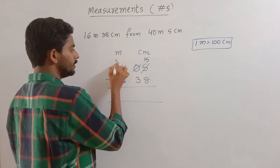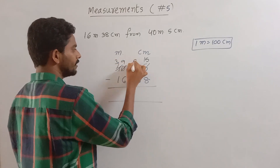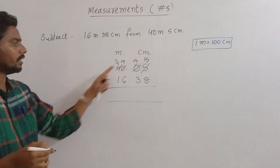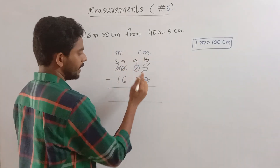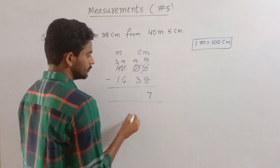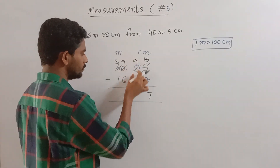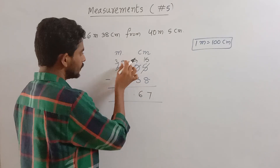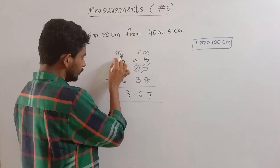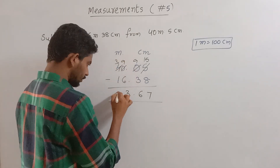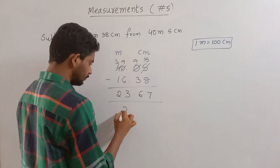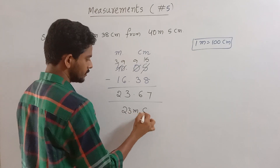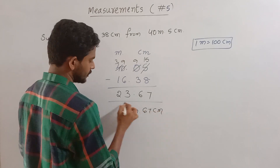5 equals 9. In 15, 8 equals 7. In 9, 3 equals 6. In 9, 6 equals 3. In 3, 1 equals 2. So the answer is 23 meters and 67 centimeters.